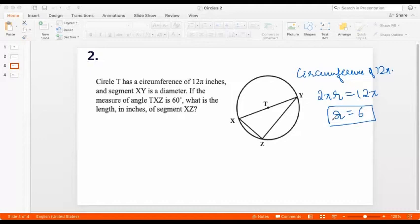Segment XY is a diameter. If the measure of angle TXZ is 60, so this angle is 60. What is the length of segment XZ? Now, since XY is the diameter, we know that the length of XY is going to be 12 because radius is 6. We also know that angle in a semicircle is 90 degrees. So we know that angle XZY is 90. And so this becomes a 30-60-90 triangle.